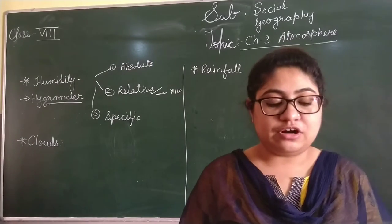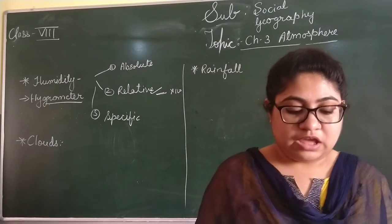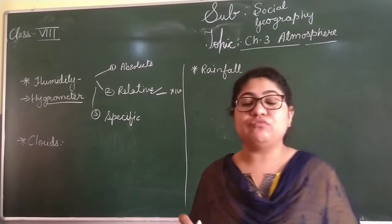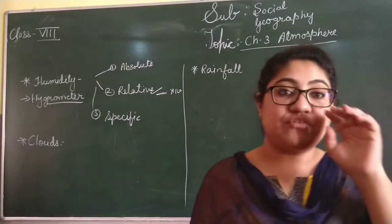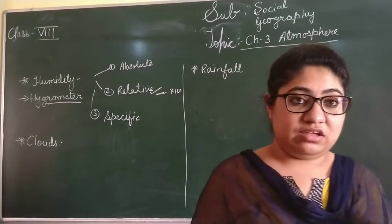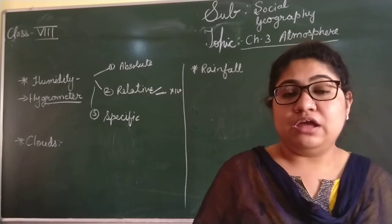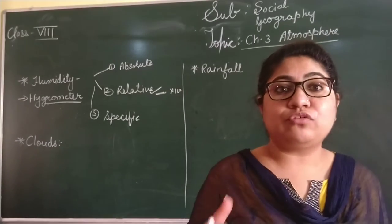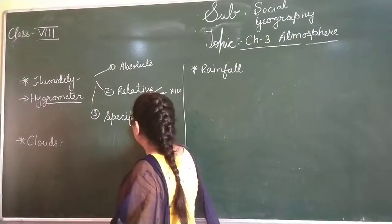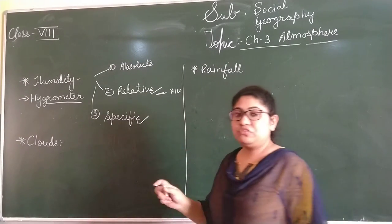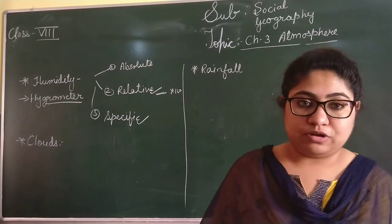And the third one is specific humidity. It is the actual amount of water vapour present in a given mass of air. Whatever the mass area of air — the amount of water vapour in that — it comes under specific humidity. So these are the three types of humidity in the atmosphere.